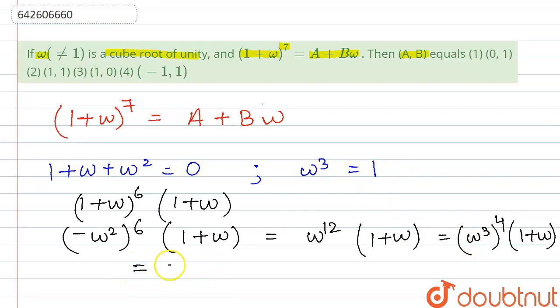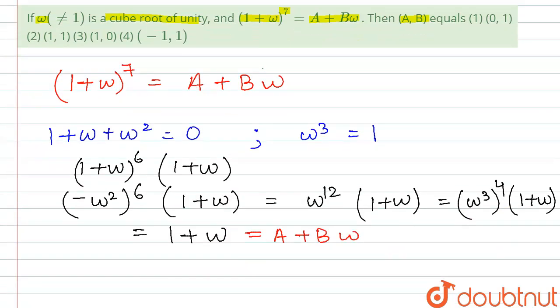So this is basically turning out to be 1 plus omega and so we can write that this is equals to A plus B omega and AB turns out to be 1, 1.